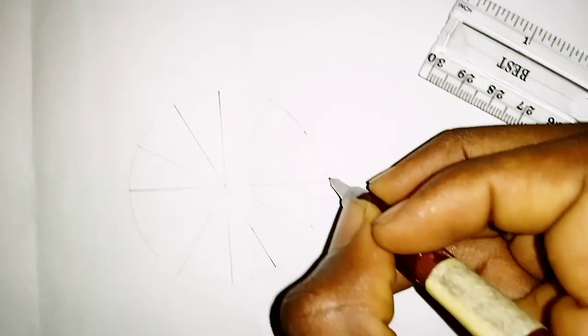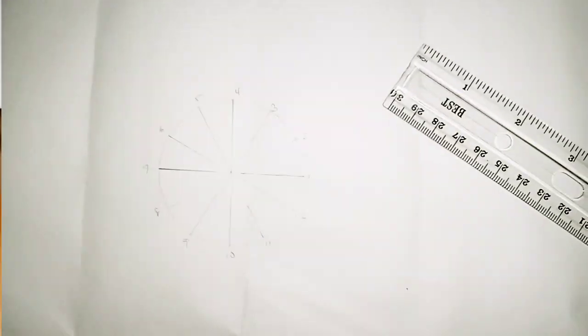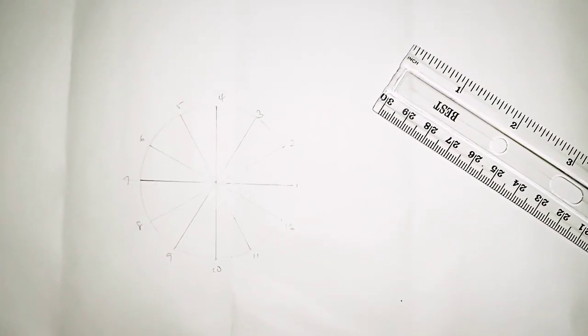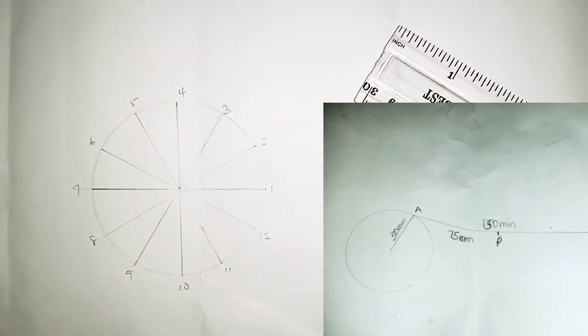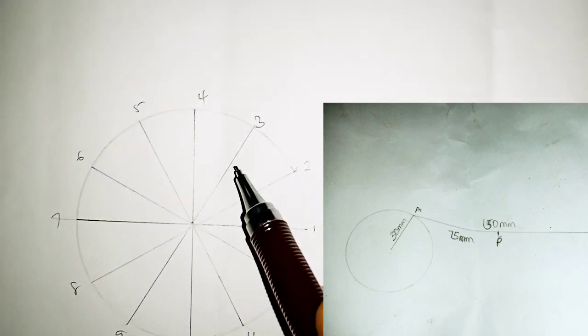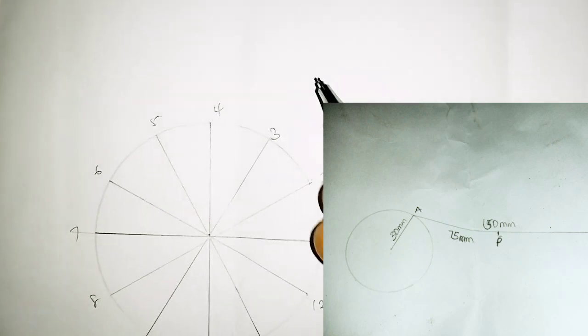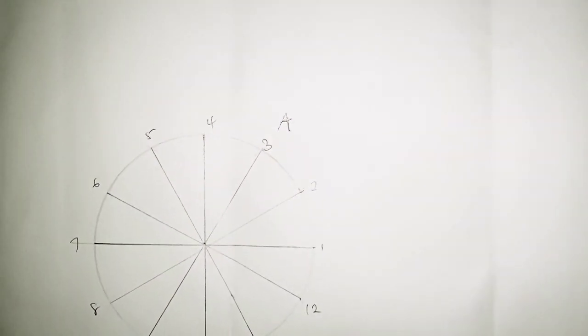So after doing the numbering, if we watch from this diagram, we're given that this point here is point A, so we put A here.